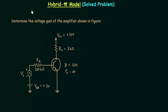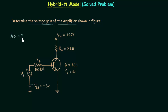In the previous lecture we completed the hybrid pi model, and now we will solve one numerical problem based on the hybrid pi model. Let's read the problem first. We need to determine the voltage gain of the amplifier shown in the figure.